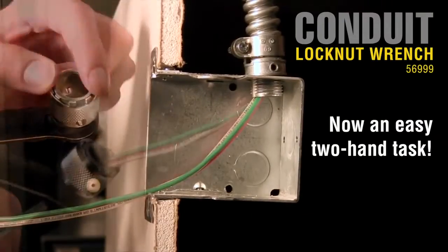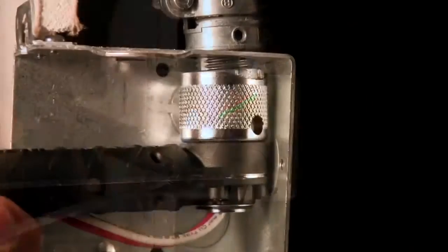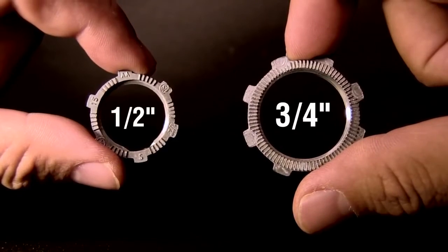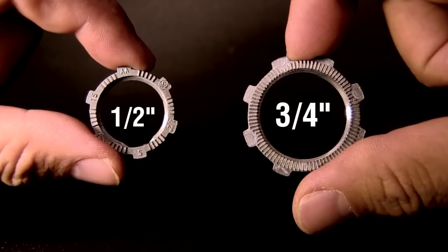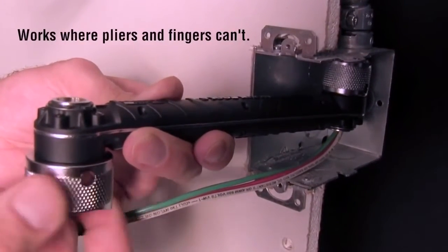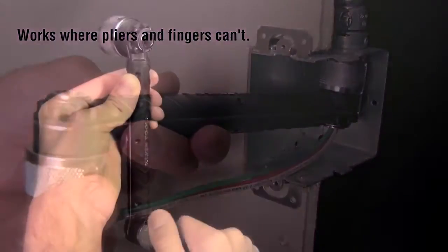Klein Tools Conduit Lock Nut Wrench turns a complicated operation into an easy two hand task. Perfect for hard to reach half inch and three quarter inch connectors, this lock nut wrench works in deep or tight boxes where pliers and fingers can't.